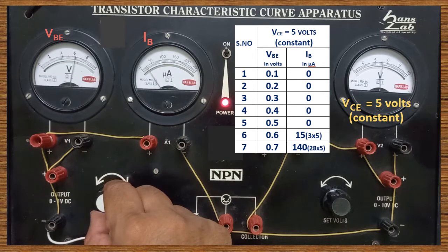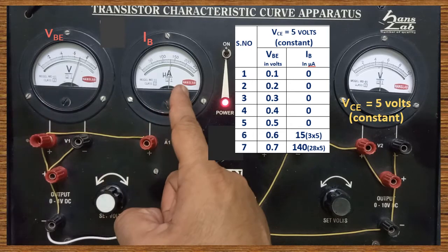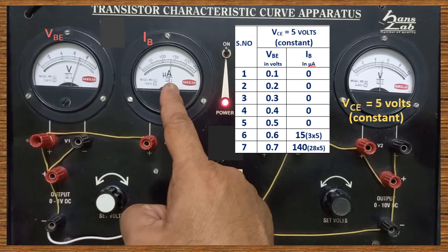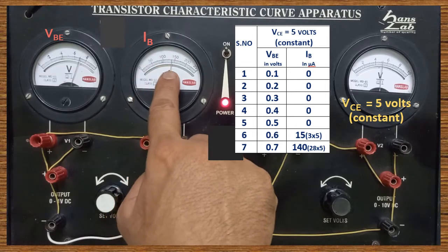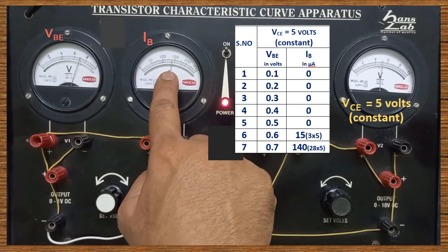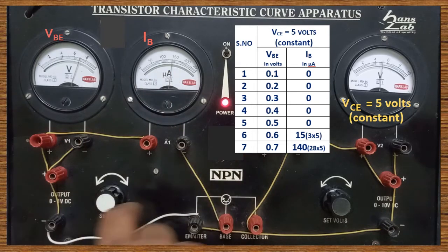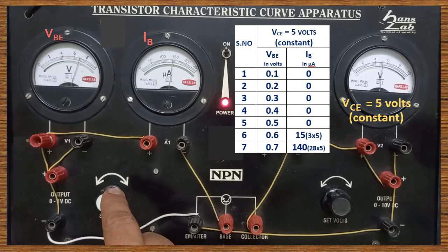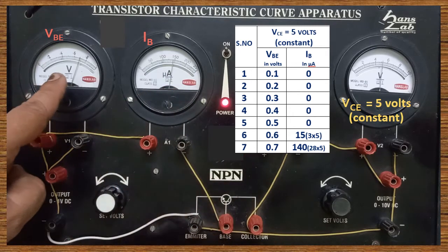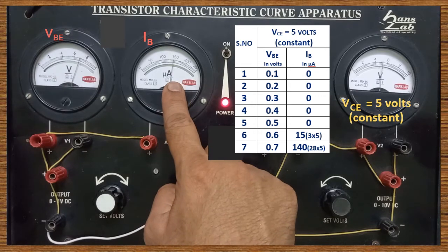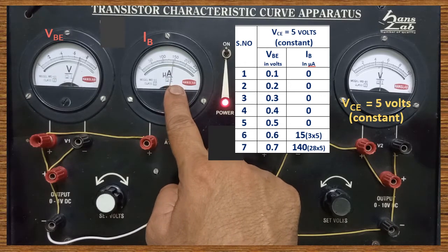Now VBE is increased from 0.6 to 0.7 volt. Note down the reading — the pointer coincides at the 28th division. 28 into 5 equals 140. So 140 microampere is shown in the microammeter. For VBE = 0.7 volt, IB = 140 microampere.